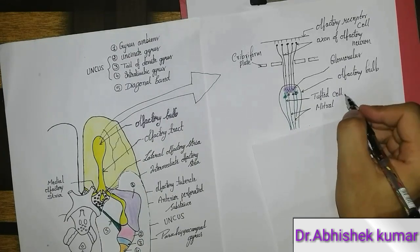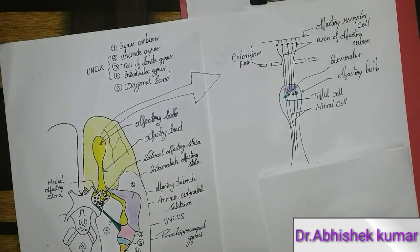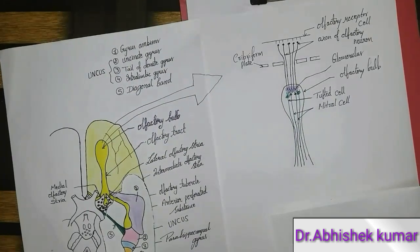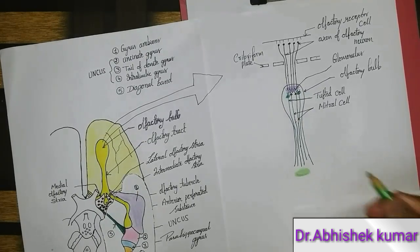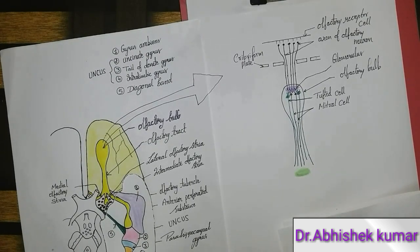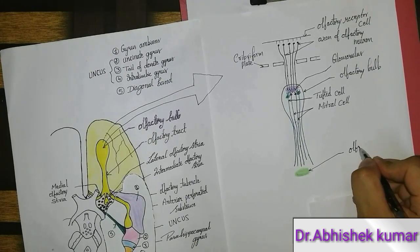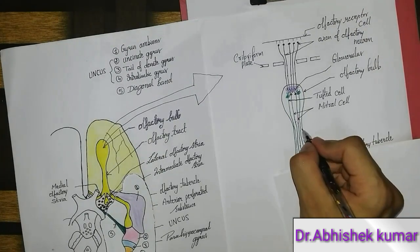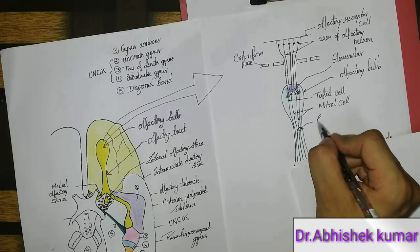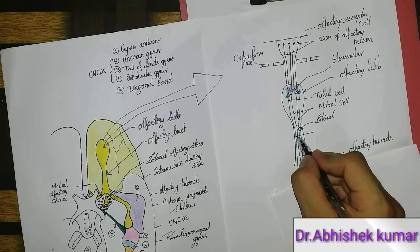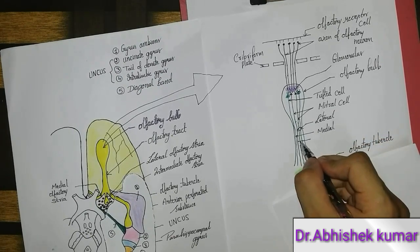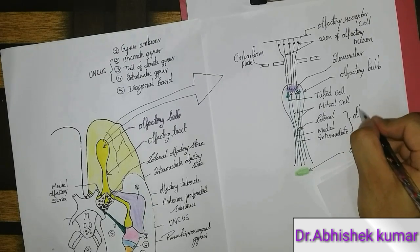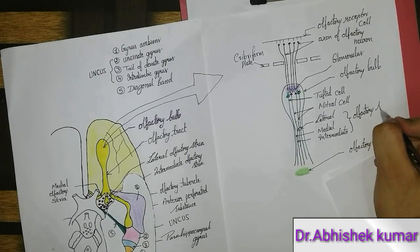The second-order neurons will arise from the glomerulus and descend down. With the green pencil I am drawing this round structure, which is called the olfactory tubercle, where the intermediate neuron will terminate. These three neurons in the circle — one lateral, one medial, one intermediate — together are called the olfactory stria.